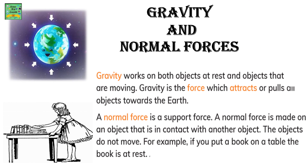Gravity and Normal Forces: Gravity works on both objects at rest and objects that are moving. Gravity is the force that attracts or pulls an object towards the earth. A normal force is a support force made on an object that is in contact with another object — the objects do not move. For example, if you put a book on a table, the book is at rest, in contact with the table, kept at rest when no force is applied.